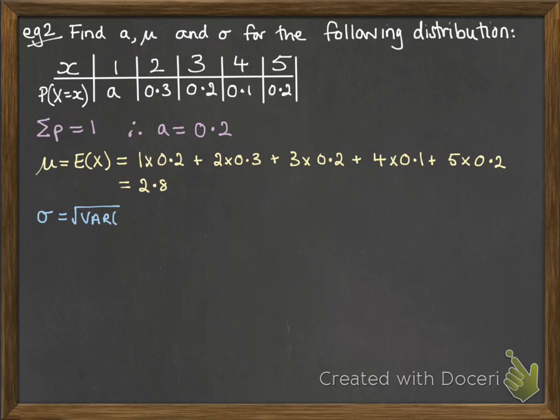And sigma is the square root of the variance. Remember, the variance was sigma squared, so sigma is the square root of the variance. And the variance, we know, is e of x squared minus e of x all squared.